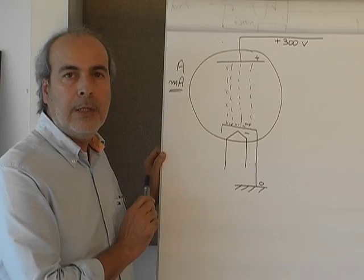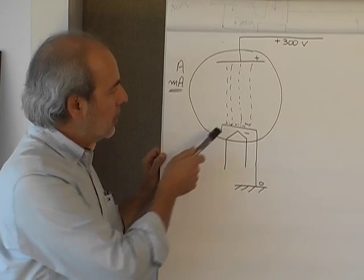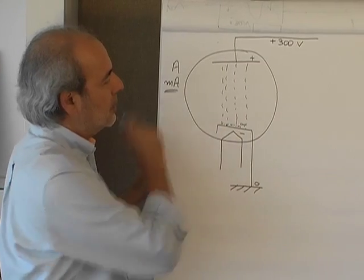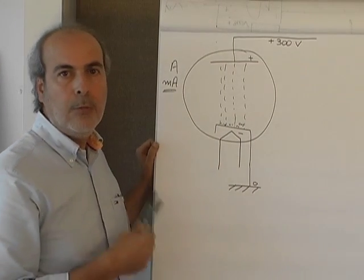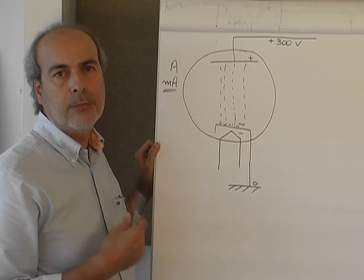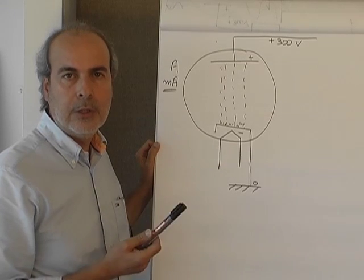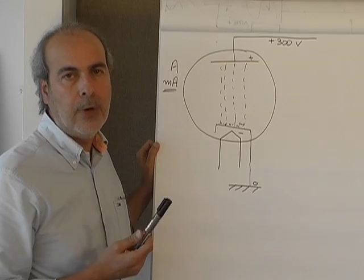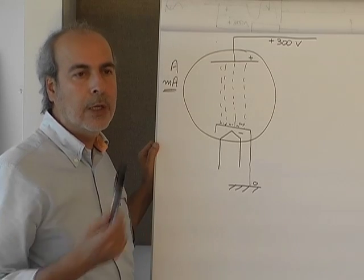Diodes are conducting the electricity in only one direction, as you can see here. Therefore, their most popular use is in the rectifier circuits of vacuum tube amplifiers or other devices.